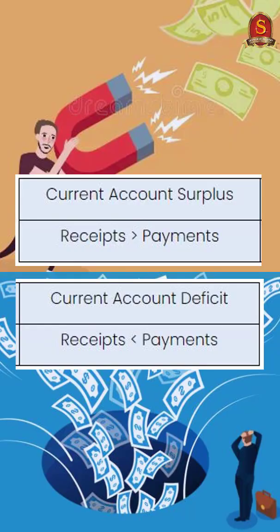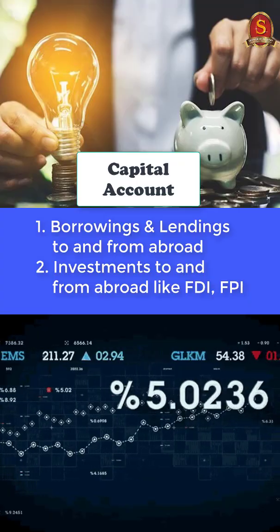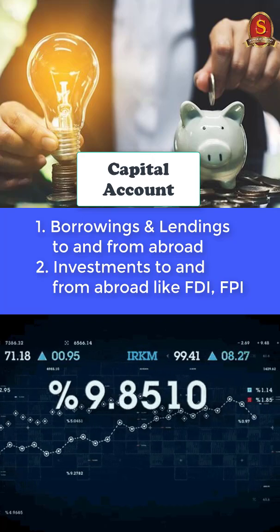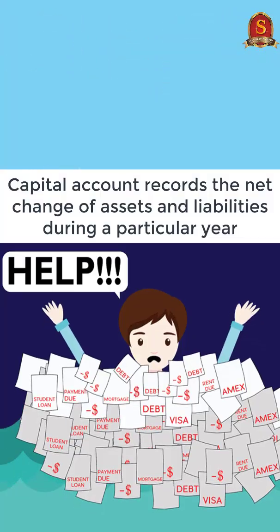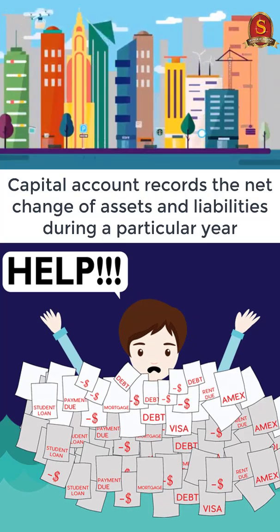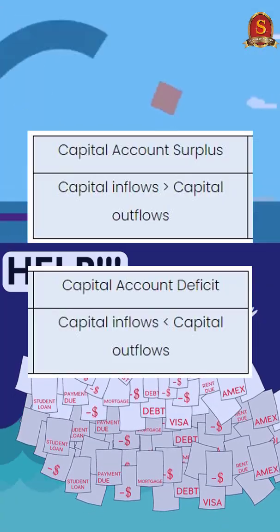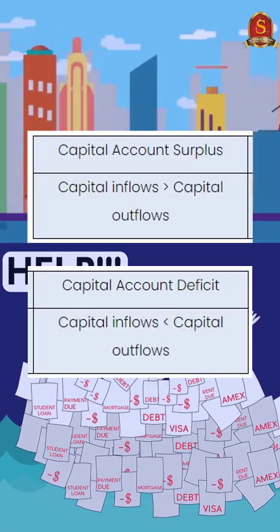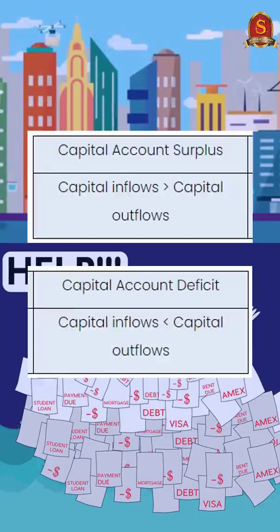If the current account is in surplus, it means receipts are more than payments. Moving on to the capital account — it includes borrowings and lending, and investments to and from abroad. The capital account records the net change of assets and liabilities during a particular year. If the capital account is in surplus, it means capital inflow is greater than capital outflow.